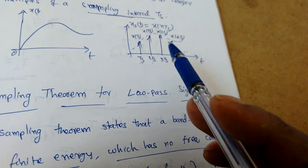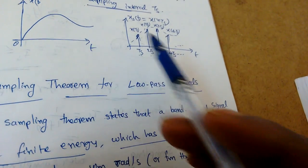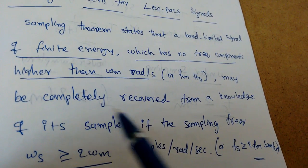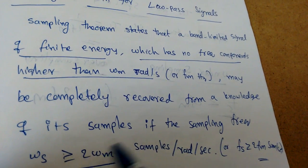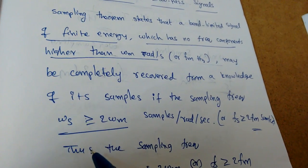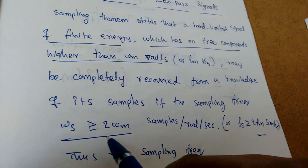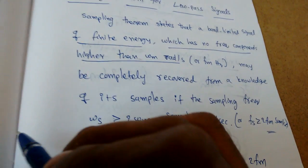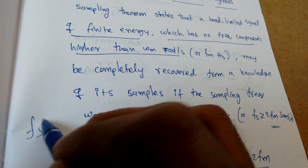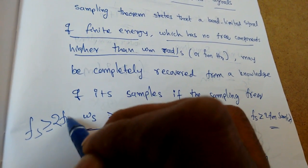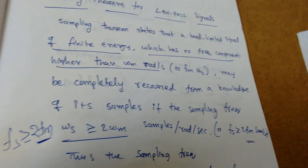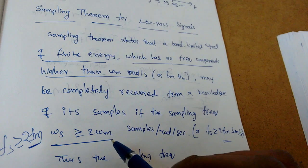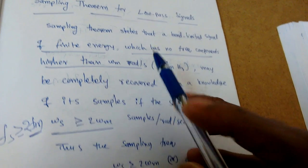Once we sample, we have to recover the signal from its samples. It will be completely recovered from its samples if the sampling frequency omega_s is greater than or equal to 2*omega_m — that is, at least 2*omega_m samples per radian per second. Equivalently, the sampling frequency fs should be greater than or equal to 2*fm, where fm is the bandwidth of the band-limited signal. Only then can we recover the signal completely. That is the sampling theorem statement.